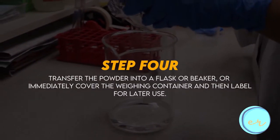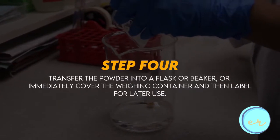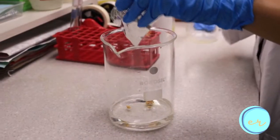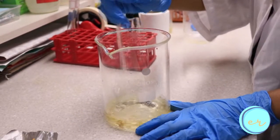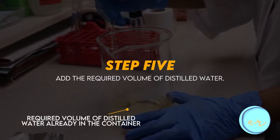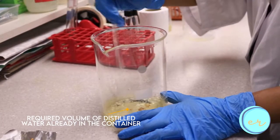Carefully transfer this weighed powder into the flask and wash off any sticking powder with distilled water using a wash bottle into the flask. Now add the required volume of distilled water while swirling the flask or bottle.